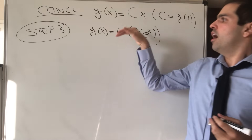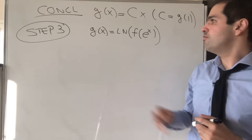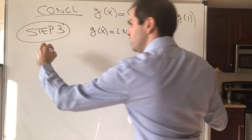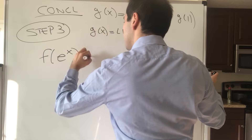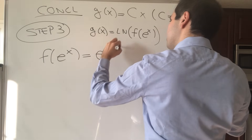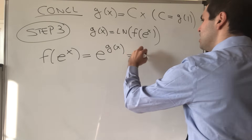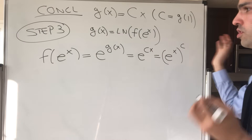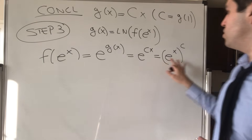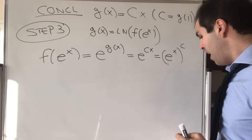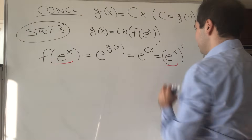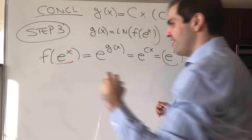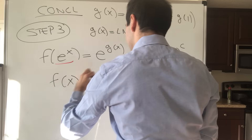Now what's the next step? We've solved for g — g is a linear function — so we just use this equation to solve for f. We get f(eˣ) equals e^(g(x)) equals e^(cx), which is (eˣ)^c. In particular, f of x equals x to the c.